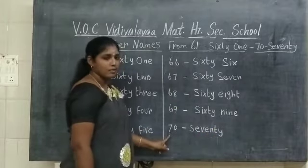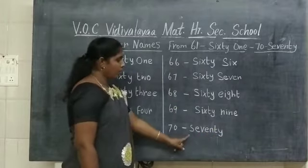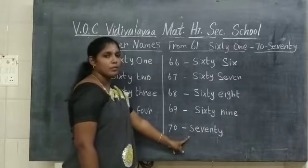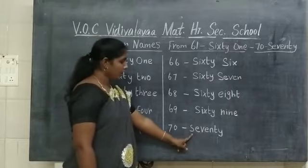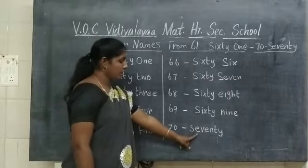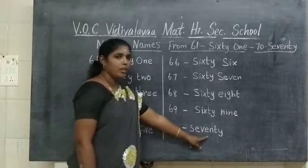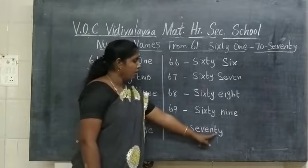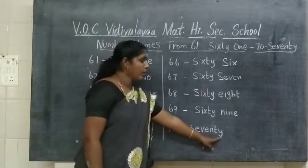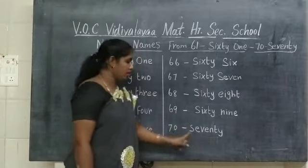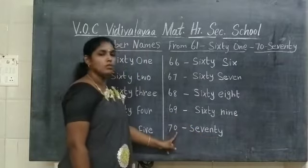What number is this? 70. What is the spelling of number 70? S-E-V-E-N-T-Y. 70.